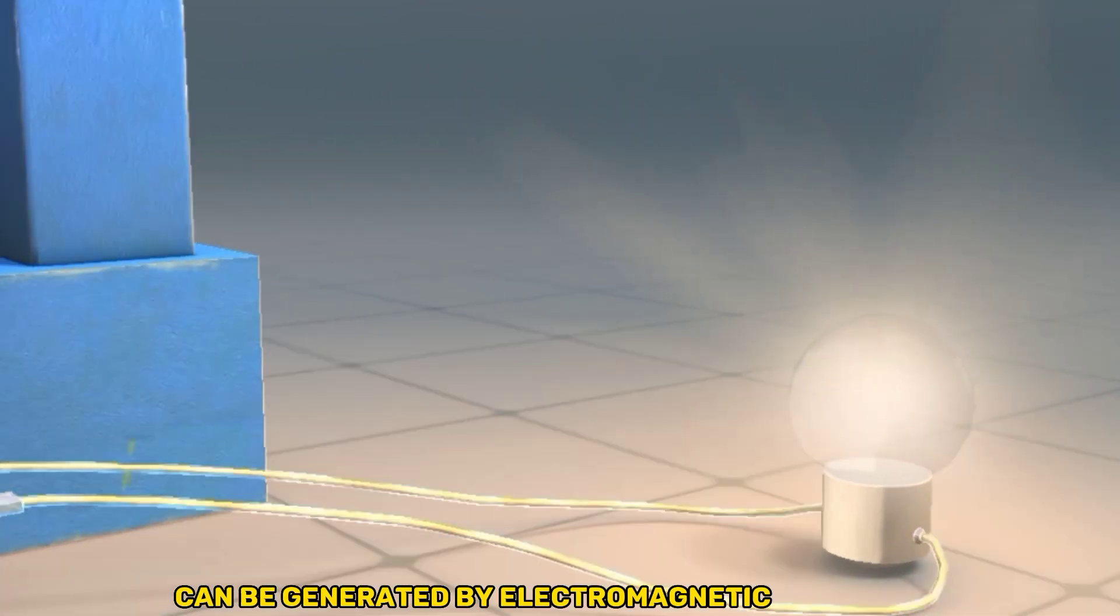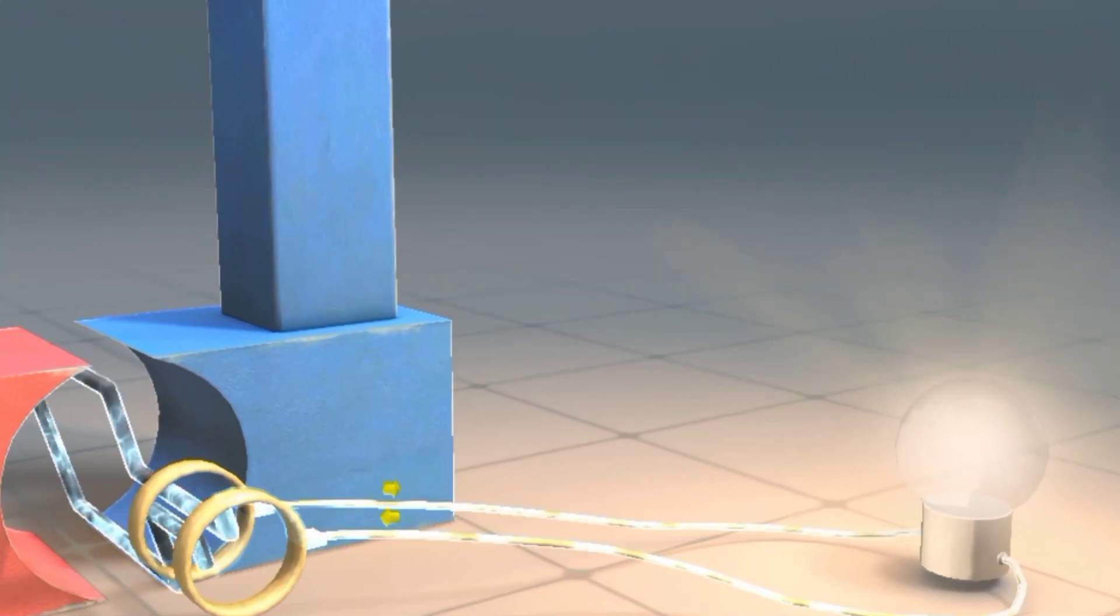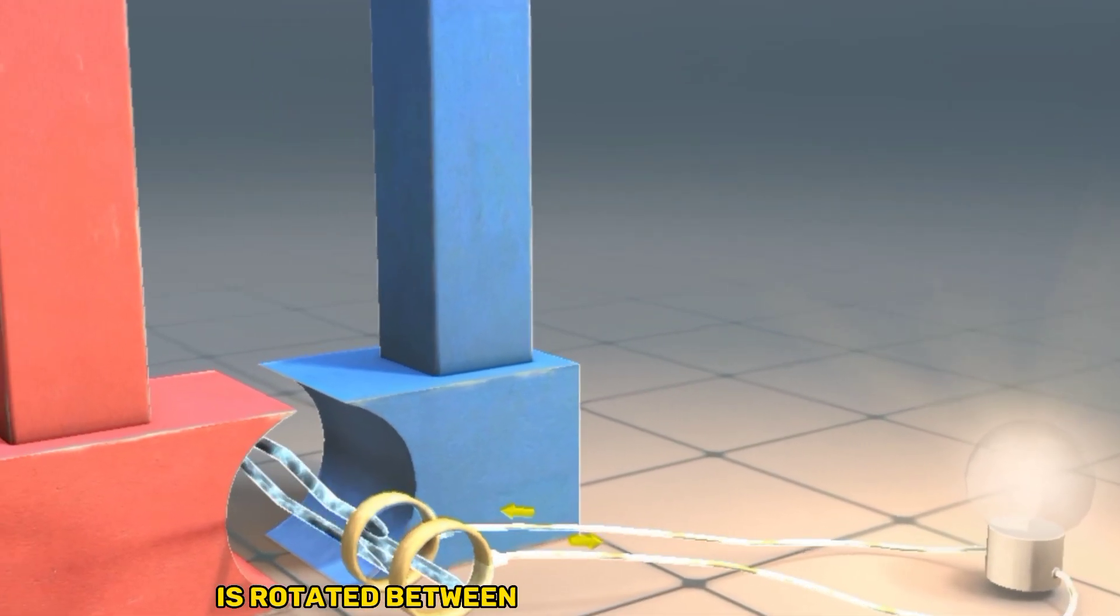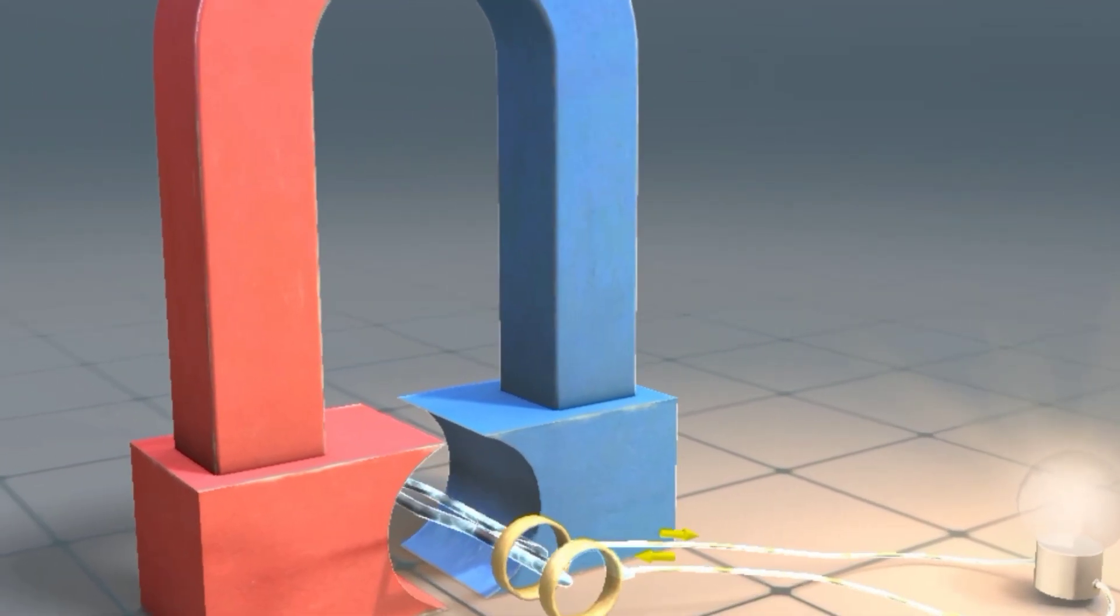Alternating current can be generated by electromagnetic induction. When an armature is rotated between the two poles of a magnet, current is induced.